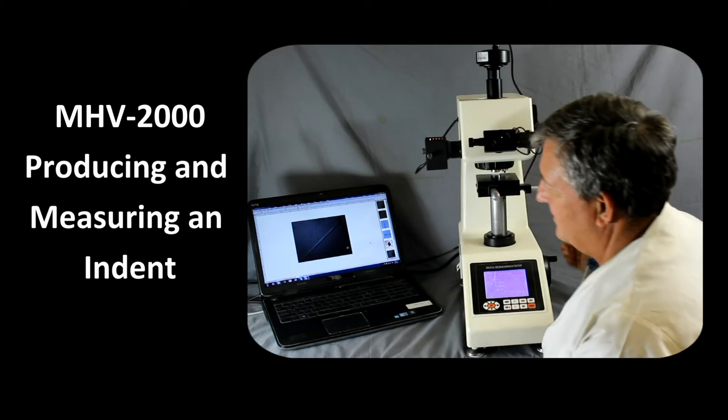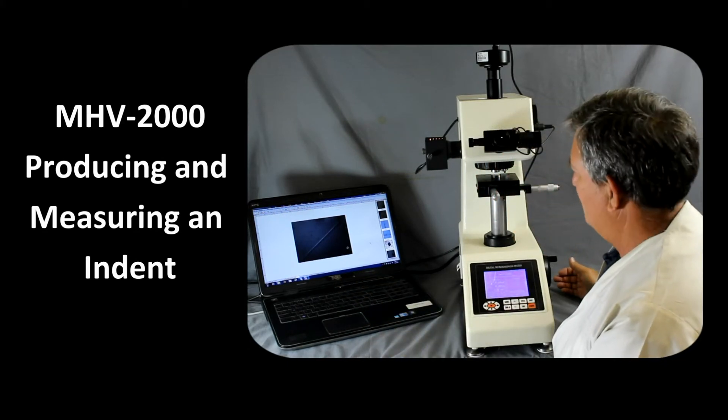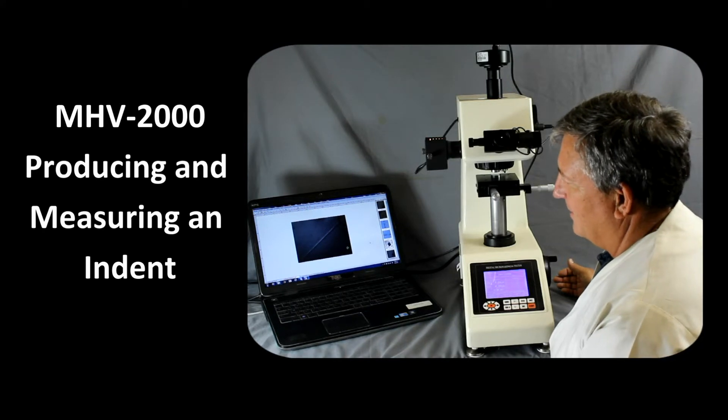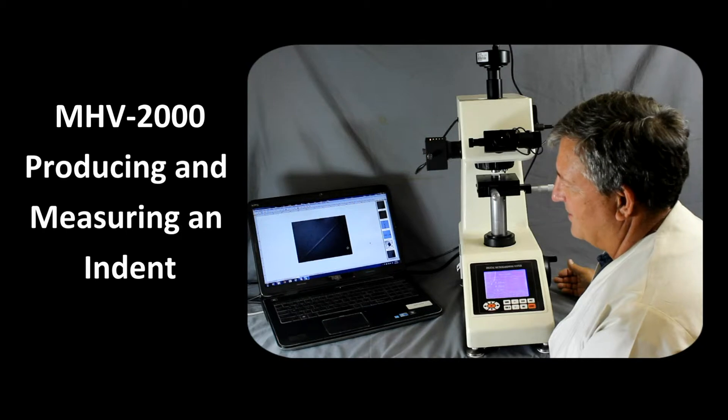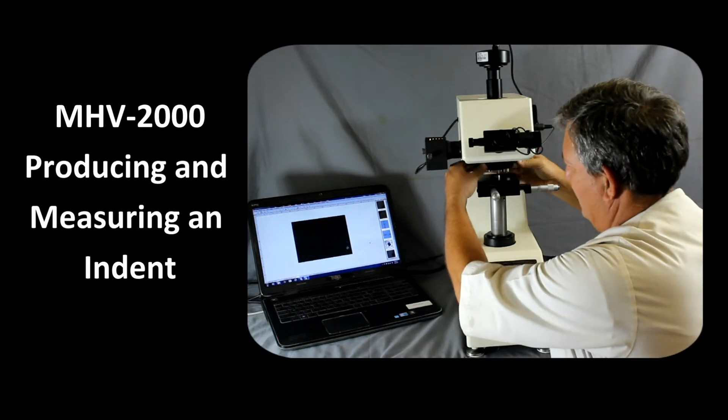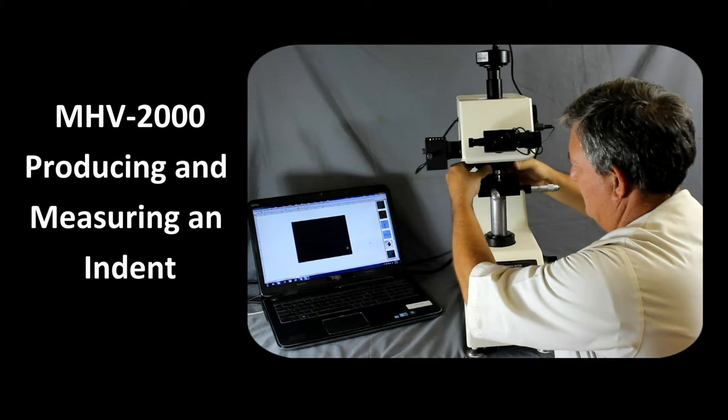So you can see on the screen here, there is a feature on the sample. And this particular sample is a calibration standard. So we can focus on the scribing material, or the scribing marks that are on the sample. And that's in pretty good focus there. So now let's rotate it over to the 40x objective.